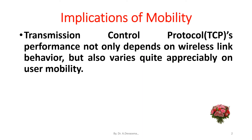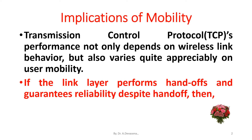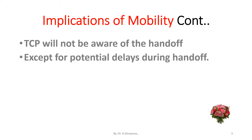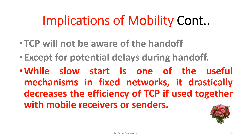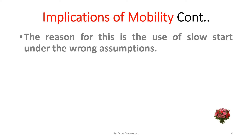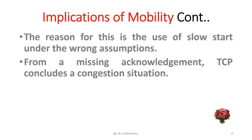Transmission Control Protocol (TCP) performance not only depends on wireless link behavior but also varies quite appreciably on user mobility. If the link layer performs handoffs and guarantees reliability despite handoff, then TCP will not be aware of the handoff except for potential delays during handoff. While slow start is one of the useful mechanisms in fixed networks, it drastically decreases the efficiency of TCP when used together with mobile receivers or senders. The reason for this is the use of slow start under the wrong assumptions — from a missing acknowledgement, TCP concludes a congestion situation.